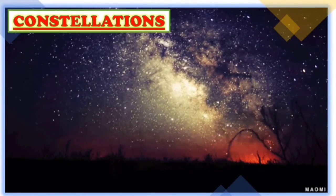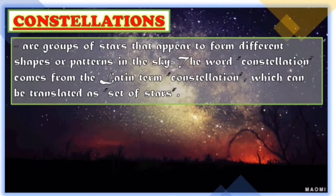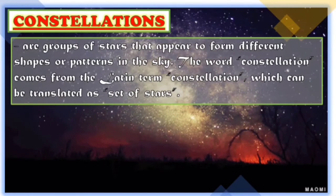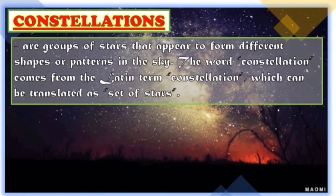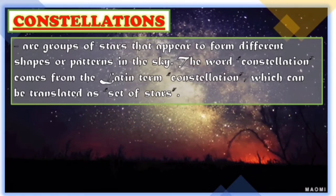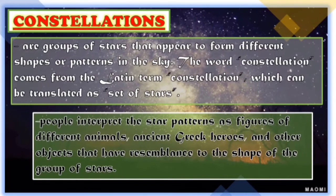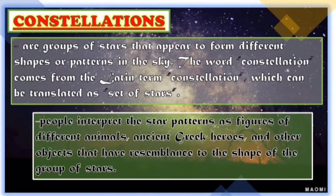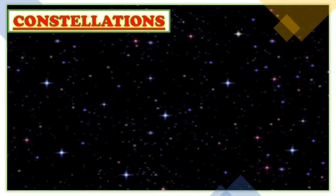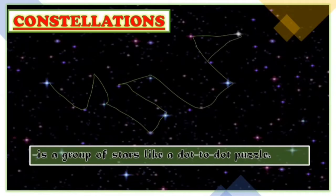Let's further know what constellations are all about. Constellations are groups of stars that appear to form different shapes or patterns in the sky. The word constellation comes from the Latin term constellation, which can be translated as 'set of stars.' People interpret the star patterns as figures of different animals, ancient Greek heroes, and other objects that have resemblance to the shape of the group of stars. In other words, class, constellations are like a dot-to-dot puzzle. If you join the dots or the stars and use a lot of your imagination, the picture would look like an object, animal, or a person.